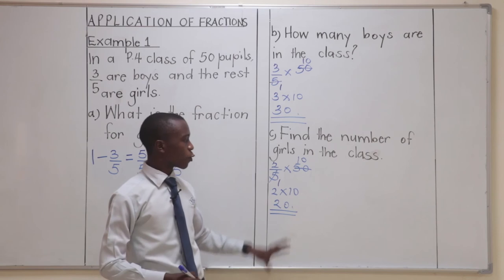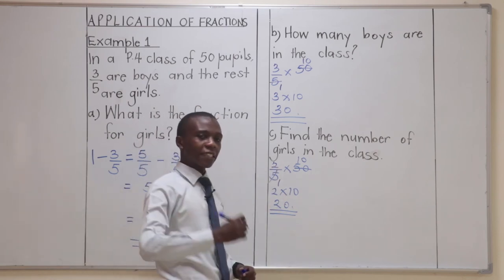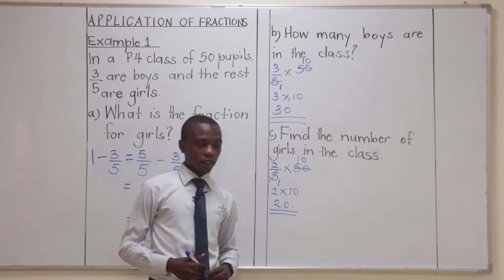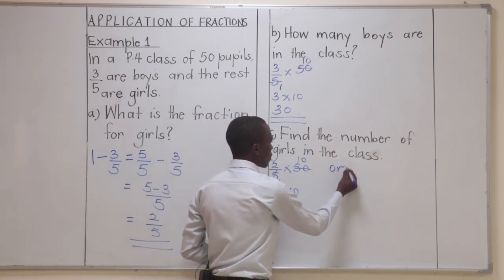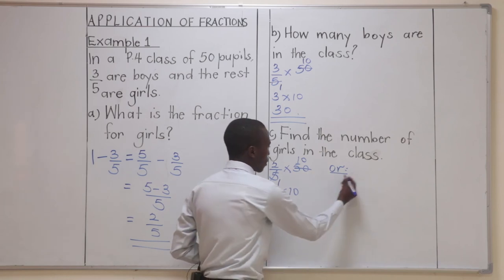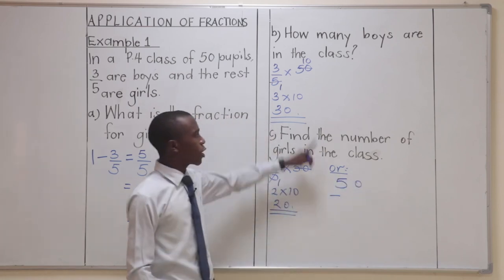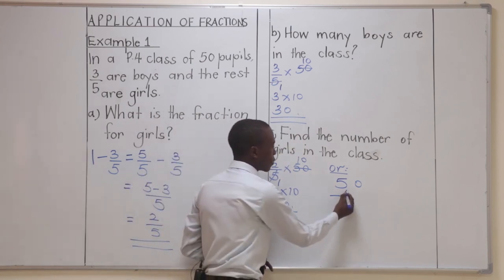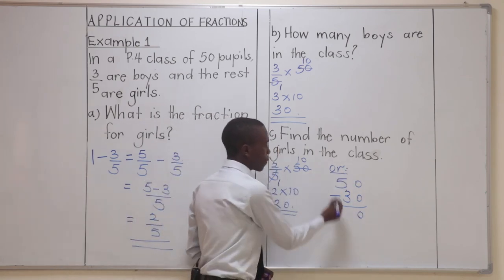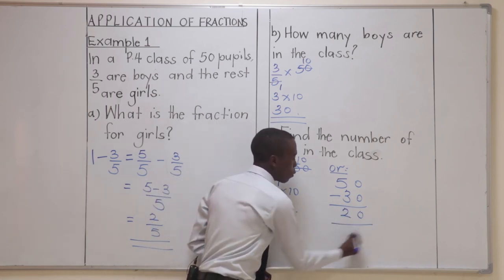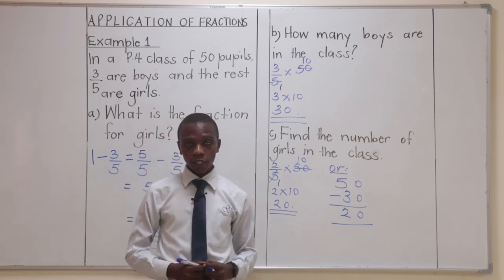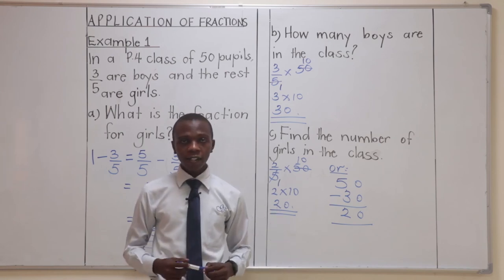Now, alternatively, if you don't find the number of girls this way, you would as well get it as a difference of the total number of children in class and the number of boys in the class. Or we can say it is a difference. A difference means we are going to subtract. So, we get the total number of children in class, which is 50, and then we take away the number of boys in the class, which is 30. When we take away 30, we have 0 take away 0, which is 0, and then 5 minus 3, which is 2. We'll end up getting the answer still as 20. So, this means that the number of girls in class is actually 20. When you get 20 and then you add 30, you'll get your answer as 50.